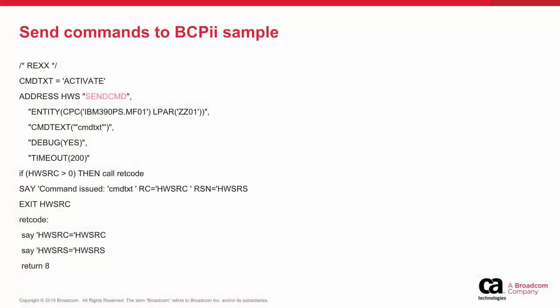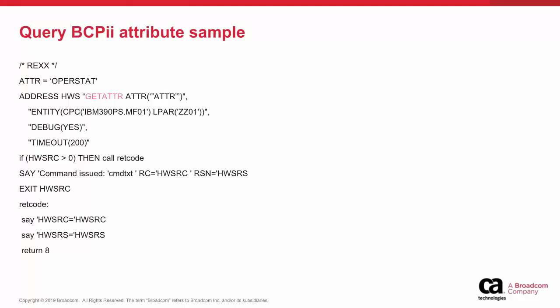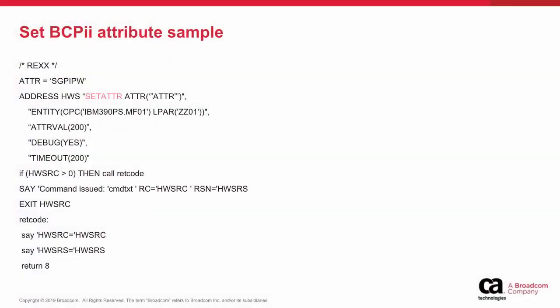This example shows how to use a REXX program and address HWS to send an activate command to LPARZZ01. This example shows how to use a REXX program and address HWS to query and display the operstat attribute on LPARZZ01. This example shows how to use a REXX program and address HWS to set the processor weight on LPARZZ01.